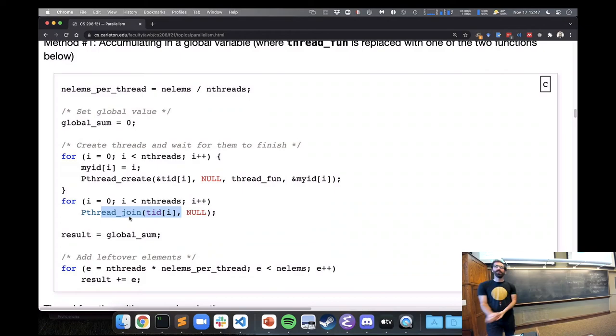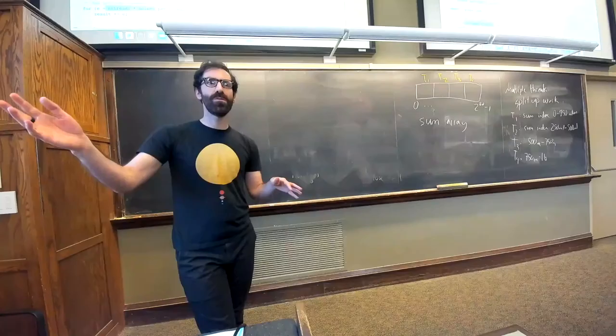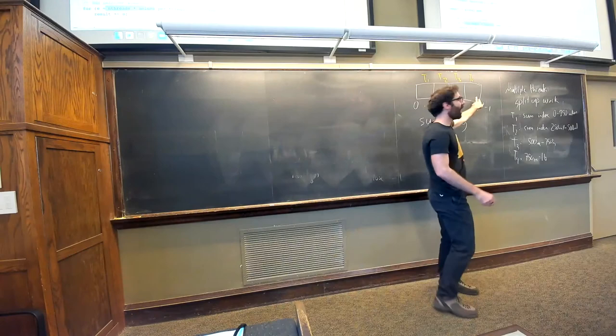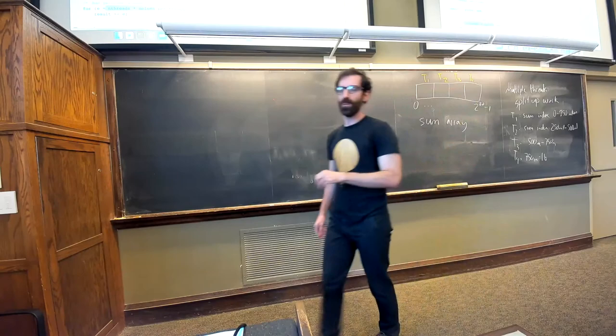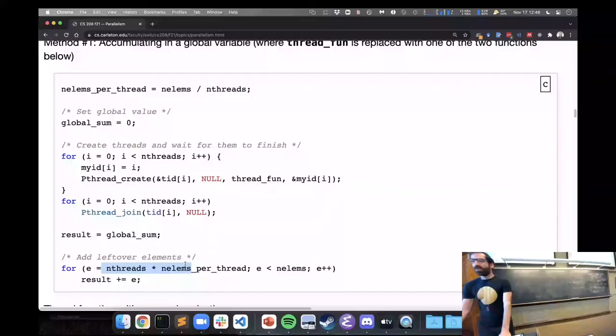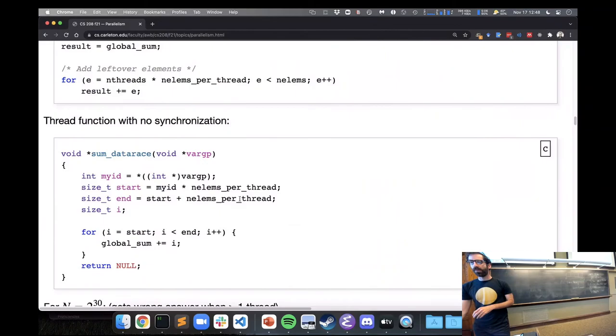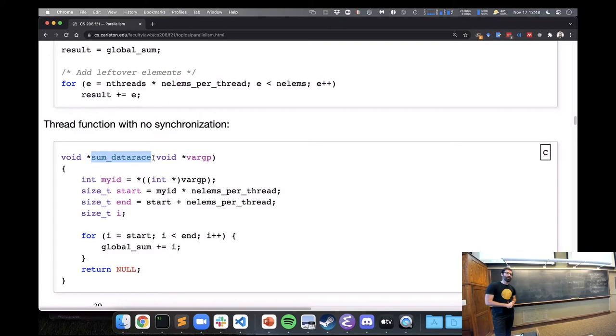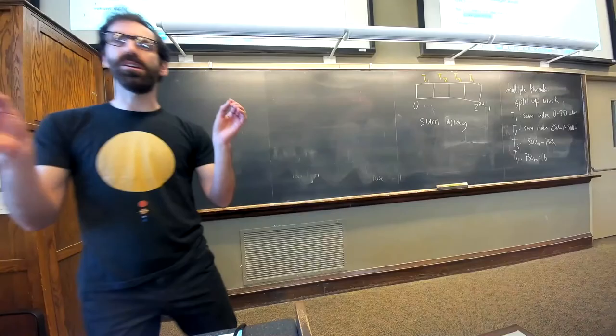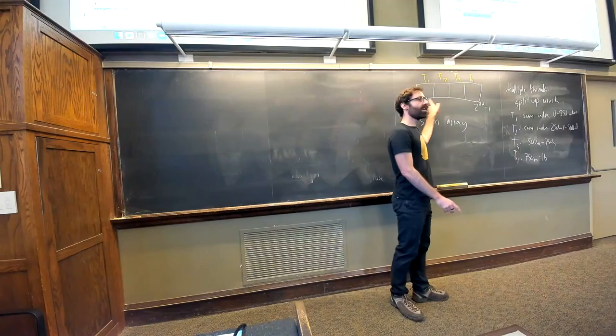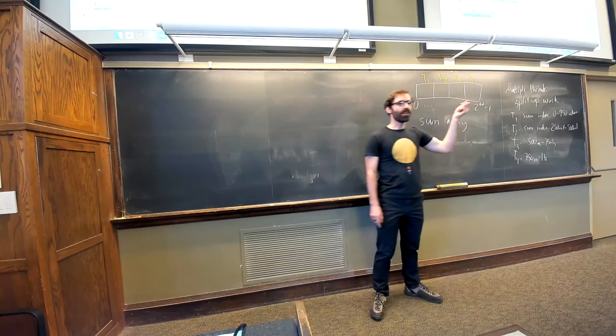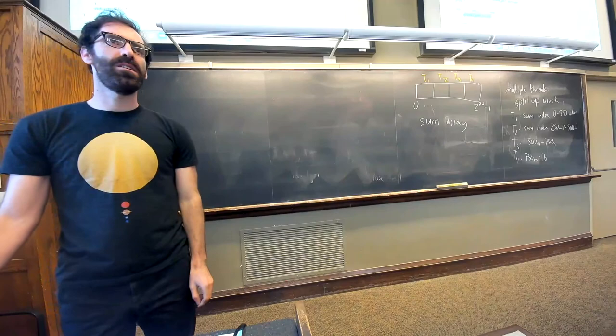After we create however many threads, we're then going to wait for all of them to finish. So join on some thread ID says this code will just wait until that thread is finished. And then it will go around the loop again, wait for the next one. So we won't get to result equals global_sum until all of our threads have finished. This code will join the threads in the order that we created them. That is not necessarily the order that they will actually finish, but that's okay because we can join a thread that's already finished and it will just return immediately.